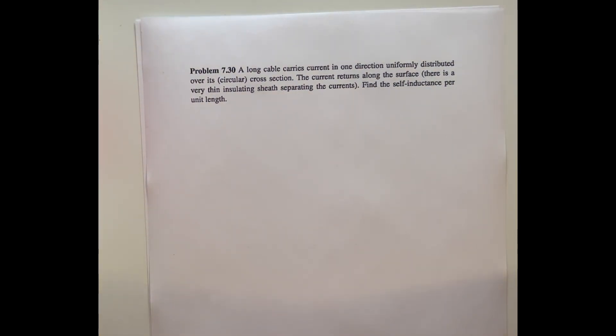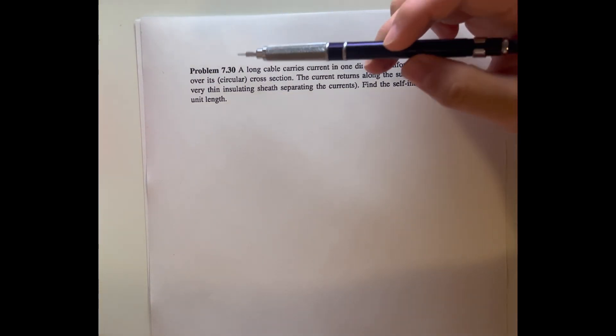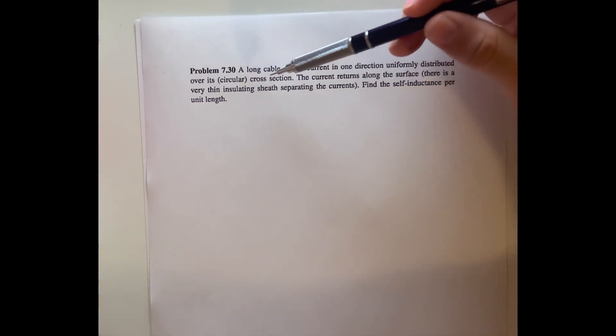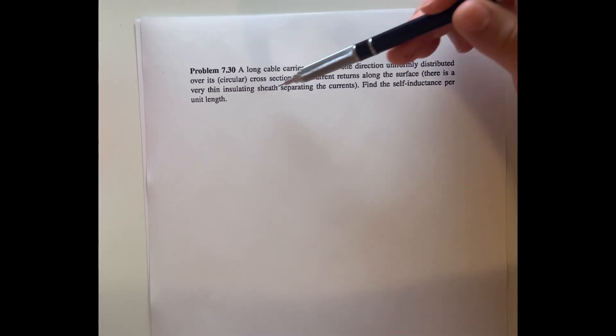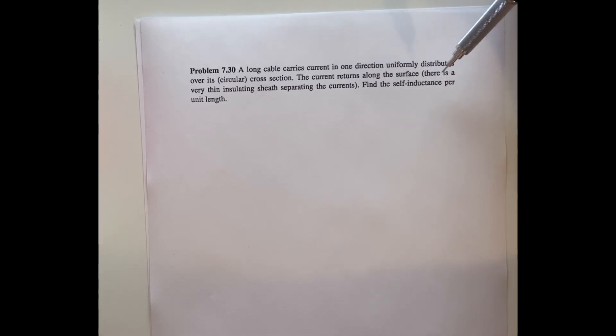Today I'm going to be solving problem 7.30 from the book Introduction to Electrodynamics by David J. Griffiths. The problem states: a long cable carries current in one direction, uniformly distributed over its circular cross section. The current returns along the surface, with a very thin insulating sheath separating the currents. We need to find the self-inductance per unit length.